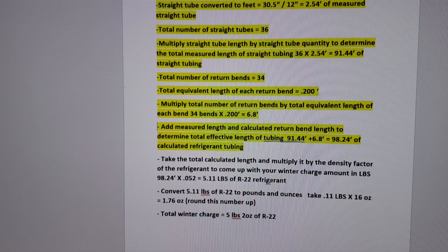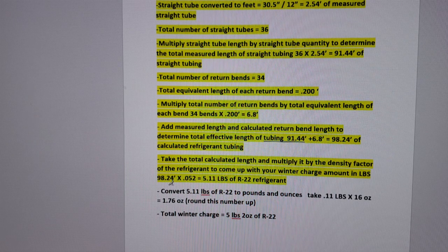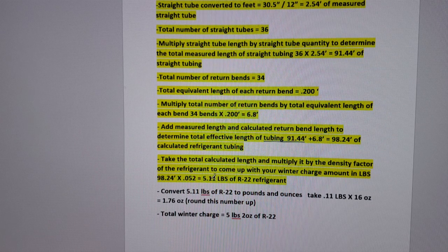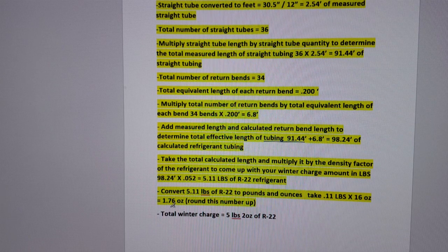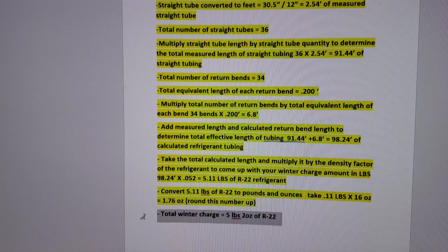Then we take the total calculated length and multiply it by the density factor — 0.052 — which we found for R22 at the minimum ambient temperature of 20 degrees. So 98.24 feet times 0.052 equals 5.11 pounds of R22 refrigerant. To convert: drop the 5 pounds, take 0.11 pounds and multiply by 16 ounces, which gives 1.76 ounces. Rounding up, our total winter flooded charge is 5 pounds 2 ounces of R22 refrigerant.